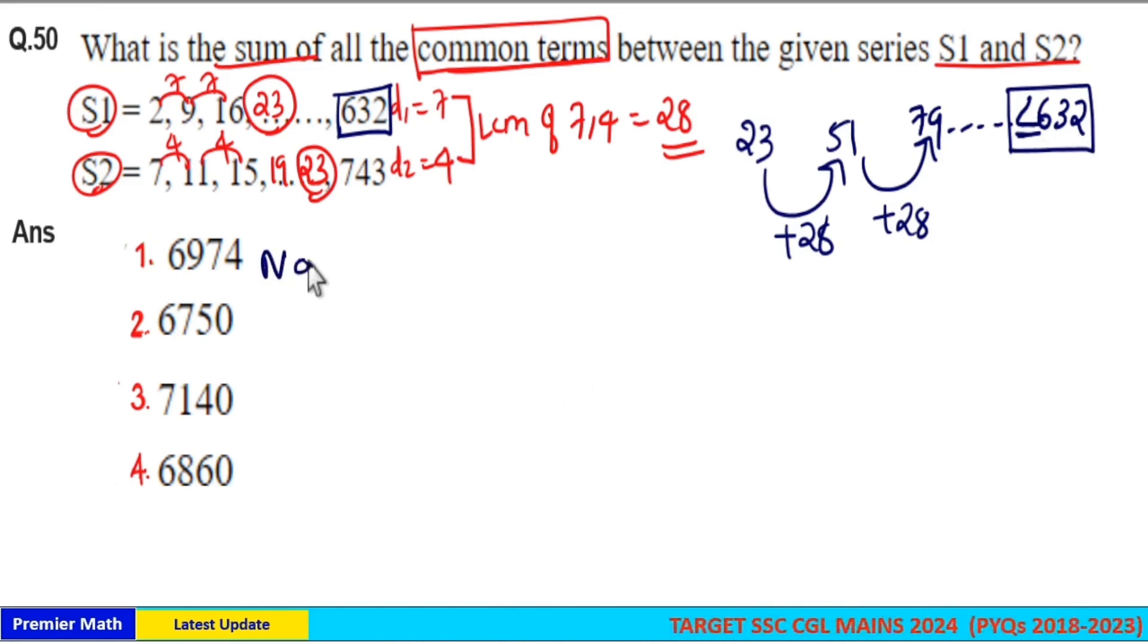Now we can find number of terms in this common term series. Here we have last term considered as 632 and first term, and we have a common difference.